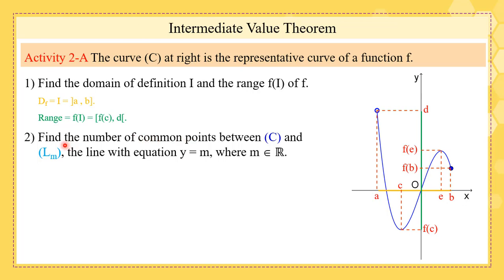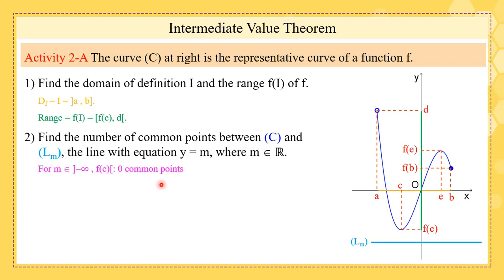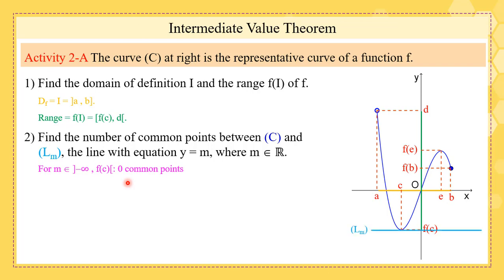The second part asks about the number of common points between the curve C and the line Lm, the horizontal line y = m where m is a real number. From negative infinity to f(c), open, we have zero common points. When m equals f(c) exactly, we have only one common point.